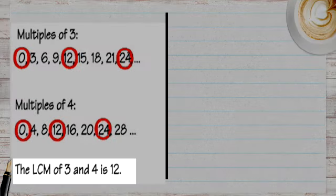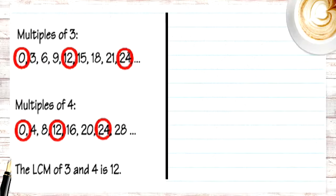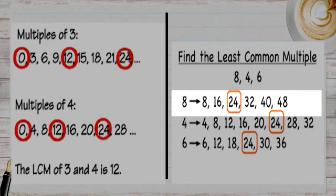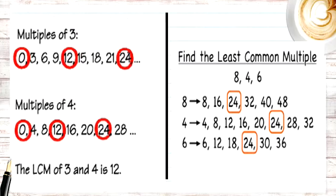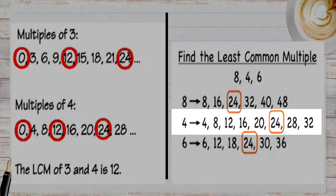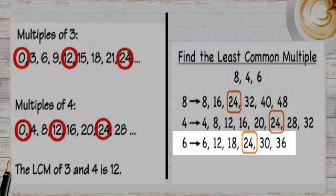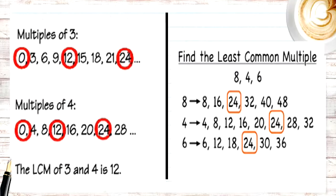In the last example, we have three numbers: 4, 6, and 8. Multiples of 8: 8, 16, 24, 32, 40, 48. Multiples of 4: 4, 8, 12, 16, 20, 24, 28, 32. Multiples of 6: 6, 12, 18, 24, 30, 36. Looking at the common multiples across all three lists, the least common multiple is 24.